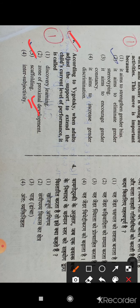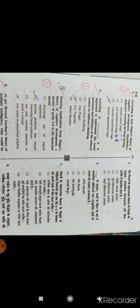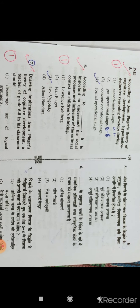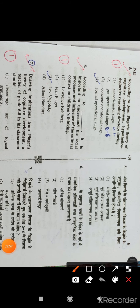Question number 5: According to Jean Piaget's theory of cognitive development, hypothetico-deductive reasoning developed during which stage? The answer is option number 4, formal operational stage. Piaget's theory has four stages: sensory motor stage, pre-operational, concrete operational, and formal operational. These four stages are very important.